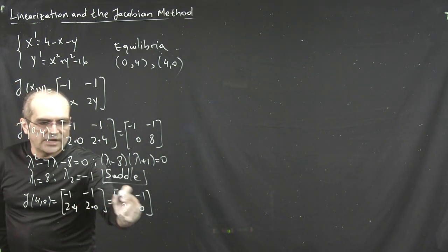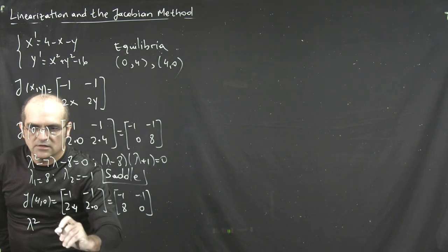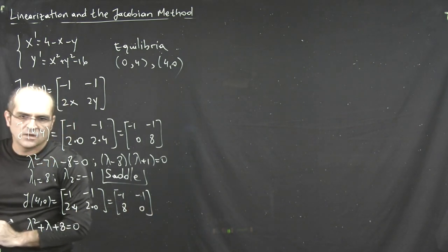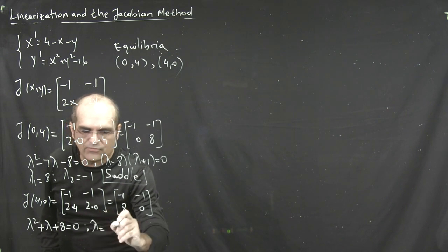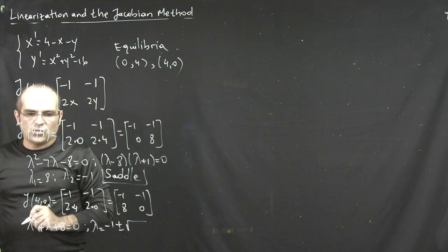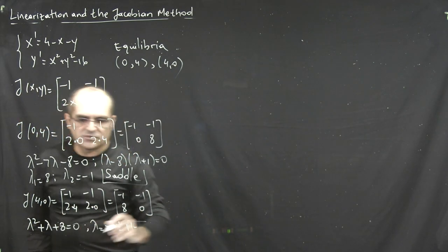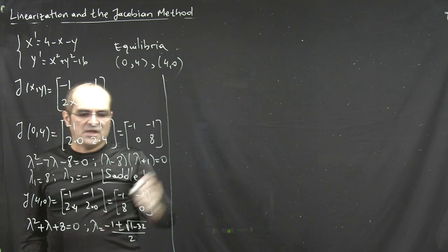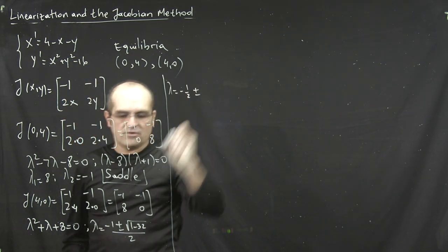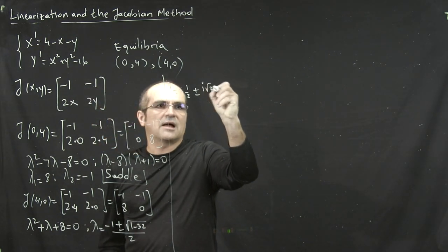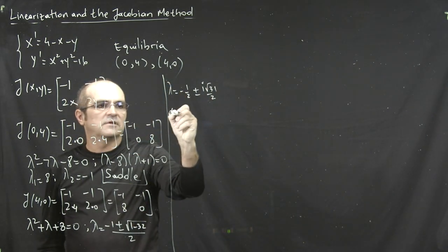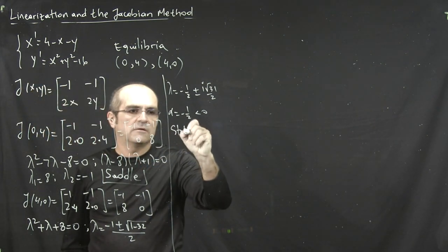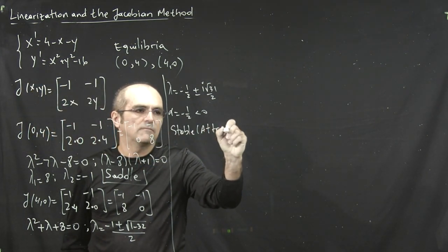What about the characteristic equation? The trace is minus 1. So that's lambda squared plus lambda plus 8. 0 minus negative 8. And using the quadratic formula, that's minus 1 plus minus square root of 1 minus 4 times 8, which is 32 divided by 2. And that means lambda is minus 1 half plus minus i root 31 over 2. So you are in the complex case with a negative real part. What is the classification? The handout says in that case the point is a stable or attracting spiral.